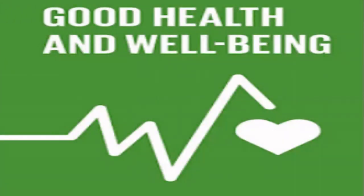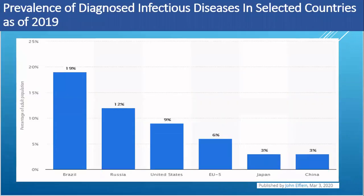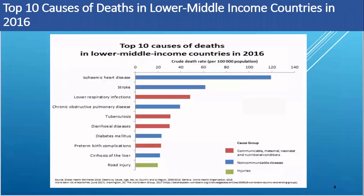My project team is Good Health and Wellbeing. Infectious diseases affect billions of people around the world. Here are the five most common diseases: hepatitis B, malaria, hepatitis C, dengue, and TB. Here is the graph that shows the prevalence of diagnosed infectious diseases in selected countries in 2019.